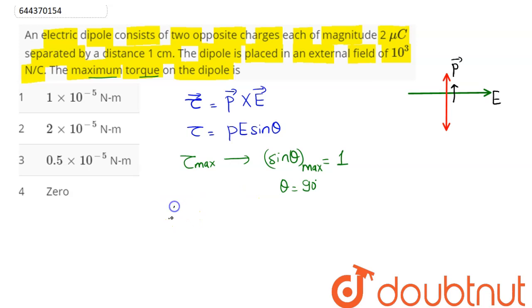In that case, torque acting on the dipole will be maximum and the maximum value of the torque will be, as sine theta value is 1, this comes as p into E. Now p here can be written as magnitude of charge on the dipole and distance between the charges into value of electric field.